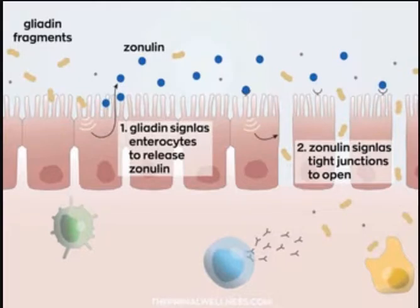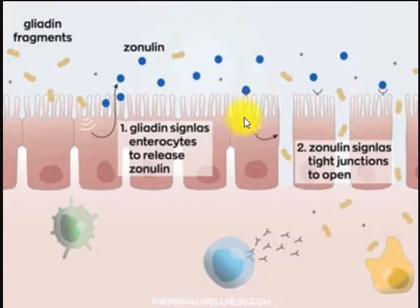I have this diagram pulled up here, and what we're looking at is the cells that line your small intestines. This top part is the inside of your small intestines. These are the cells that line it, and down here is essentially the rest of your body.